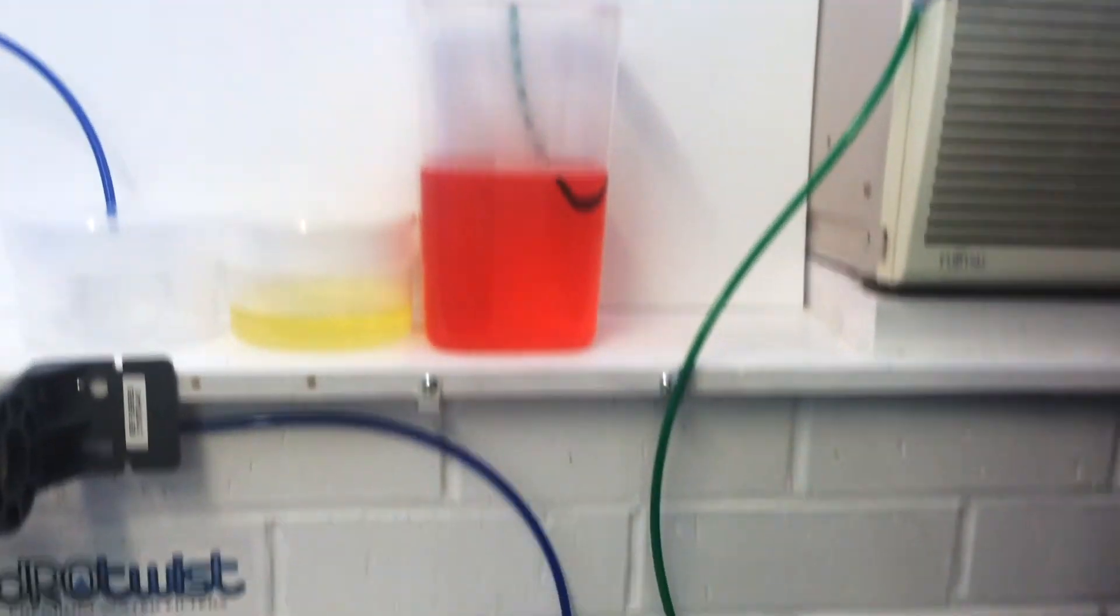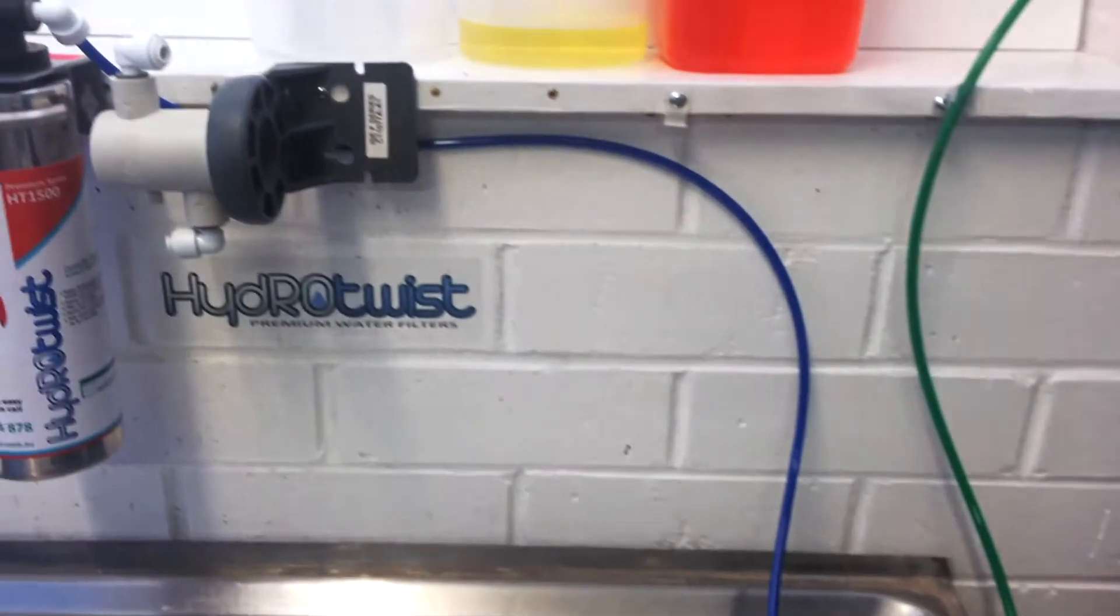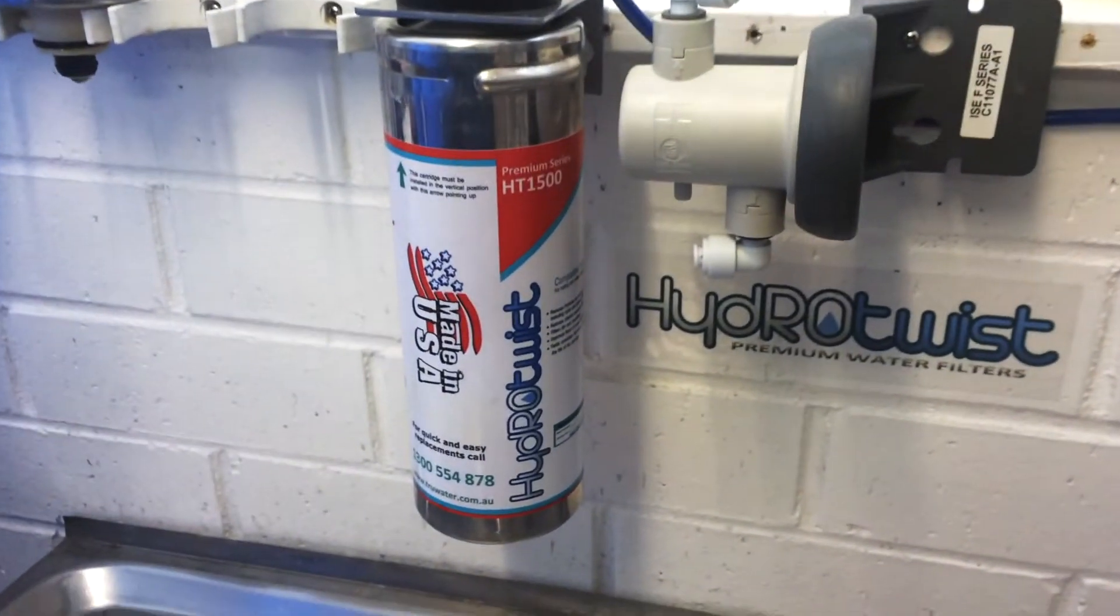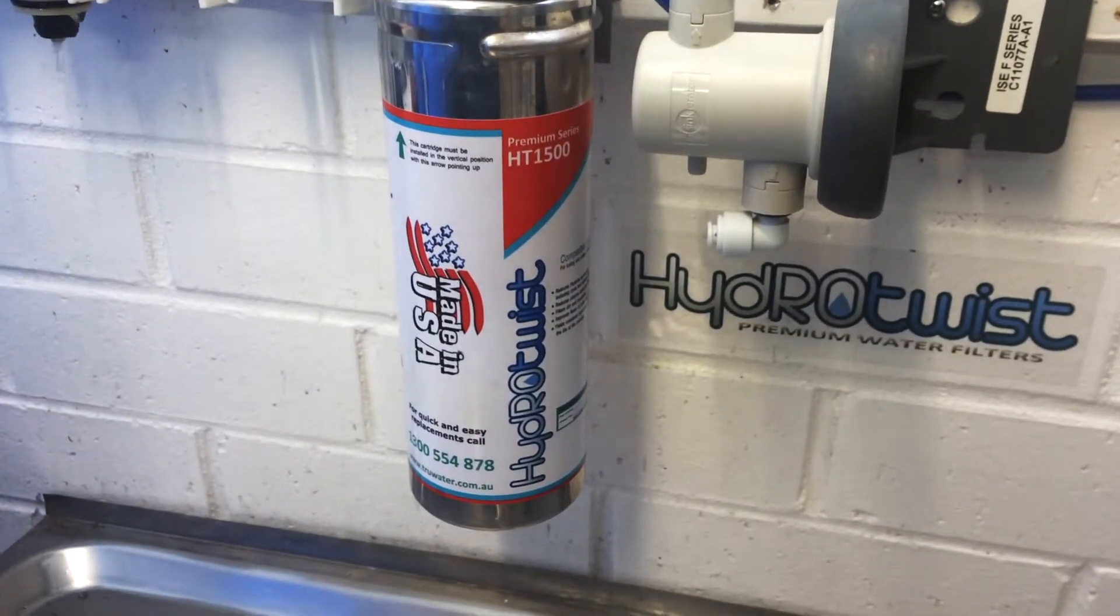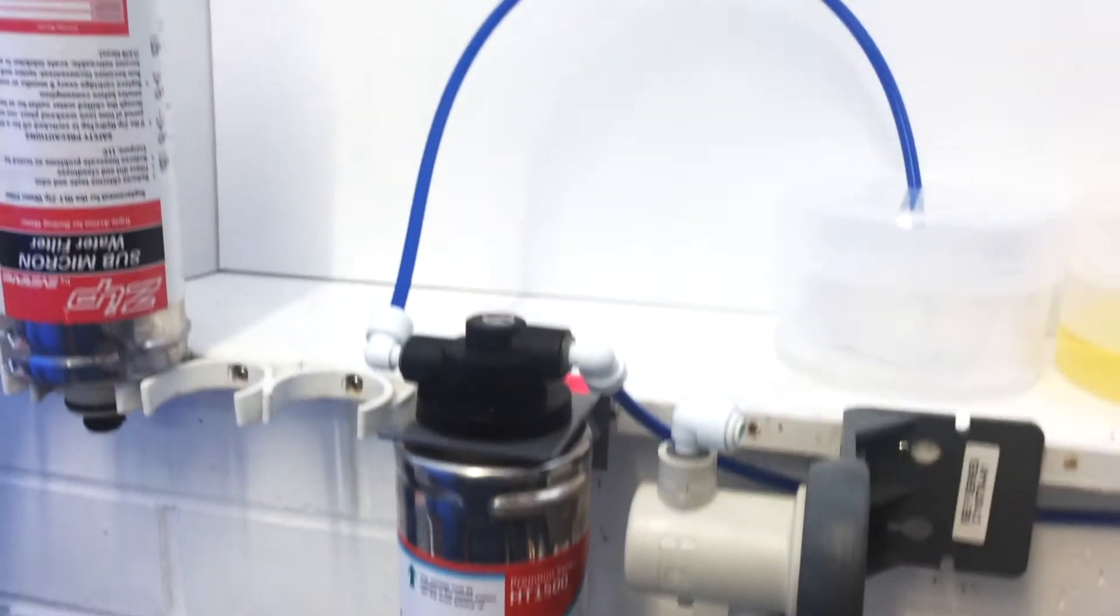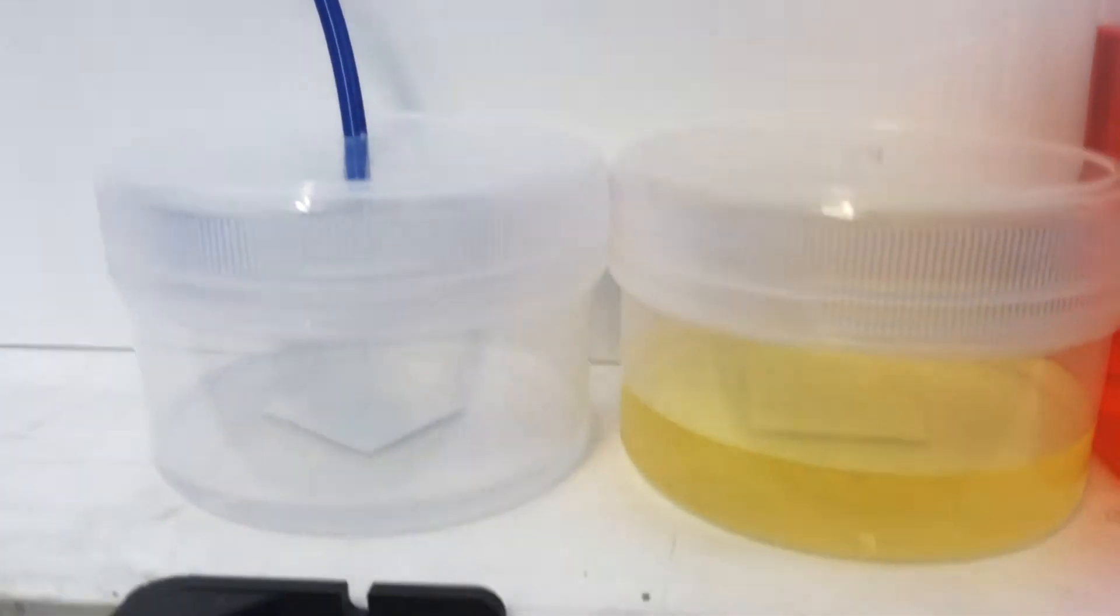Here is the second test with the same water but using the Hydro Twist HT1500 filter. As you can see here, the HT1500 has removed nearly all of the color. We give the Hydro Twist HT1500 a rating 10 out of 10.